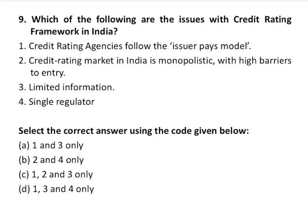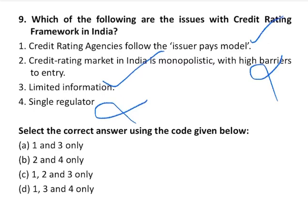Question number nine is about the credit rating framework in India. The first statement says credit rating agencies follow the issuer pays model — correct. The second says the credit rating market in India is monopolistic with high barriers to entry — wrong, it is oligopolistic with high barriers to entry. The third says limited information is a concern — correct. The fourth says there is a single regulator — wrong, there are multiple regulators covering credit rating agencies under respective sectoral jurisdictions. Statements one and three are correct, so the answer is option A.